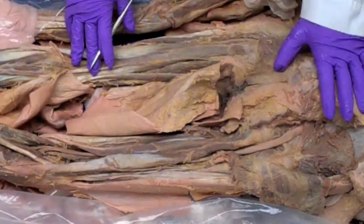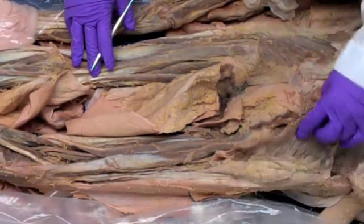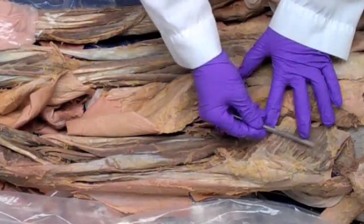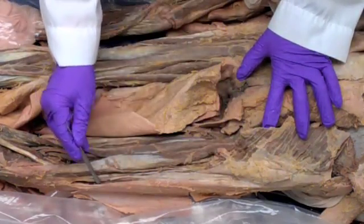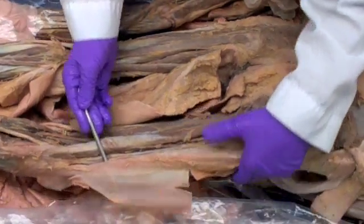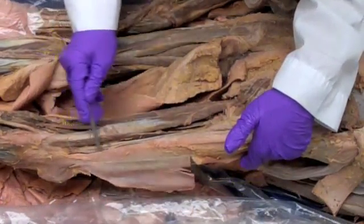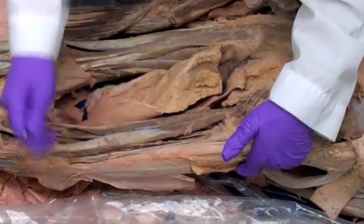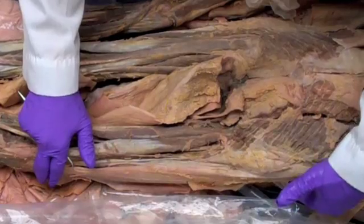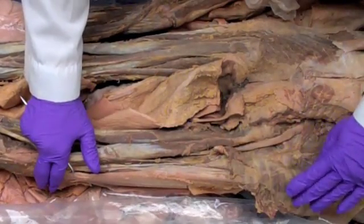We have the gluteus maximus here, nice. As it feeds into the iliotibial tract, which is right here. You can see that very nicely how thick that band is. We cannot see the tensor fascia lata, but it is at the ASIS, it's right in here. We move that muscle out of the way.